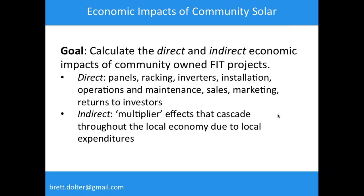Those direct impacts have a multiplier effect — that's the indirect impact. If you buy a racking system for a solar panel, imagine it might be made of aluminum. We can trace back the economic activity that occurred throughout the economy to create that racking system: the company had to buy fabricated aluminum, the aluminum fabrication company had to buy raw inputs, they bought electricity — there's this cascading ripple of impacts and expenditures made in order to get these components available for the project. Adding all those up gives you the indirect impact.